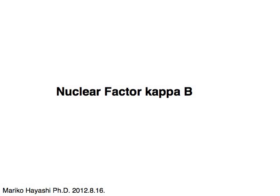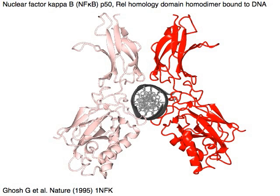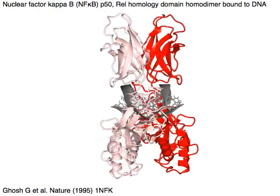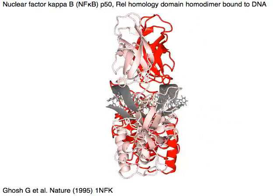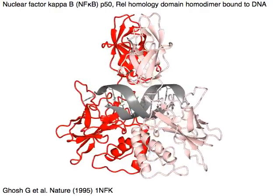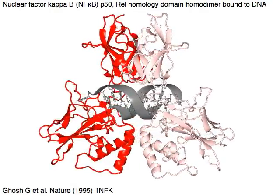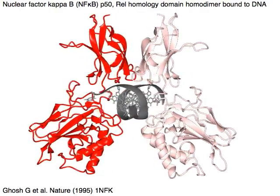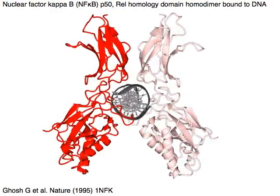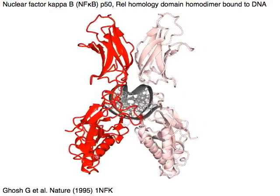Nuclear Factor Kappa B, a transcription factor. Nuclear Factor Kappa B or NF-Kappa B P50 subunit, rel homology domain homodimer bound to DNA, two subdomains, both with immunoglobulin-like beta sandwich structure.